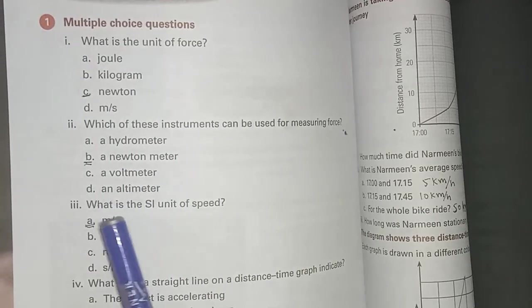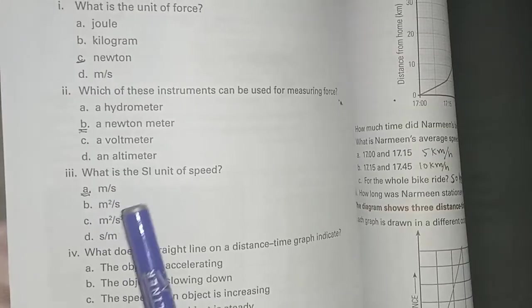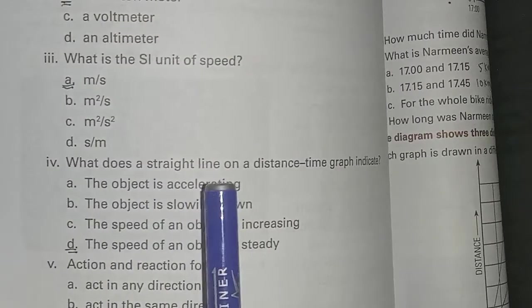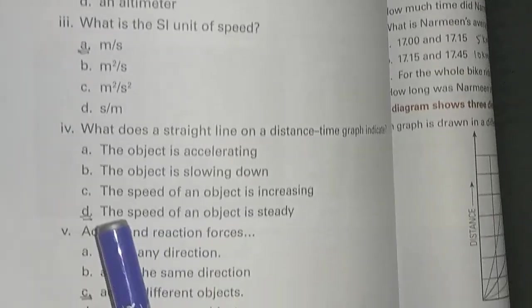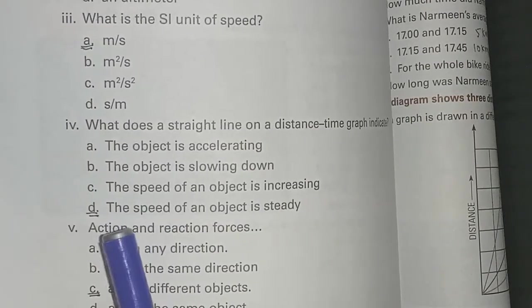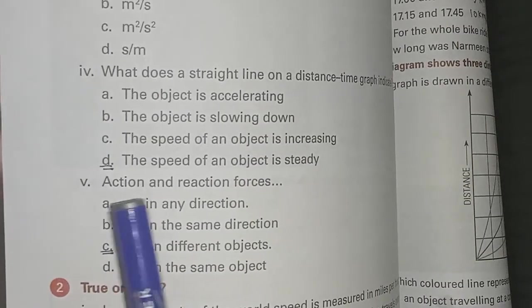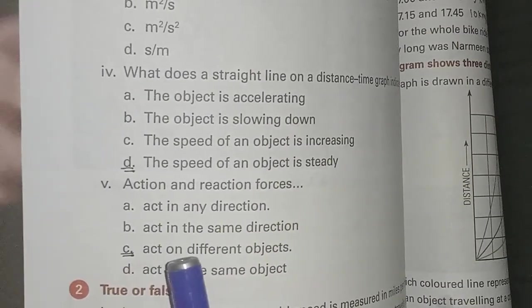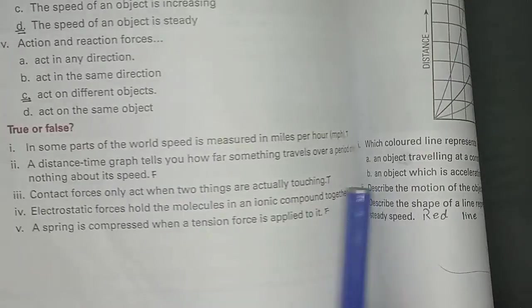What is the SI unit of speed? Meter per second. What does a straight line on a distance-time graph indicate? This option is correct - the speed of an object is steady. Last multiple choice: action and reaction forces act on different objects. C is the correct option.